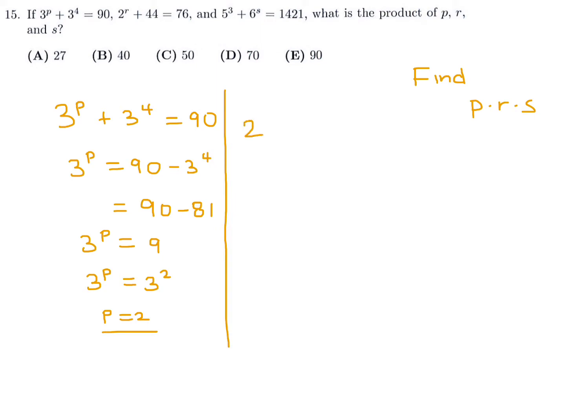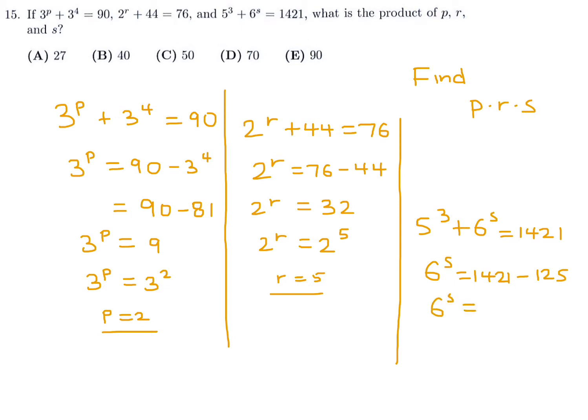Now let's figure out the next one. That's 2 to the power of r plus 44 is 76. So 2 to the power of r is 76 minus 44. 76 minus 44 is 32. And 32 is 2 to the power of 5. So that means that r is equal to 5. And then last one is 5 to the power of 3 plus 6 to the power of s is 1,4,2,1. 5 to the power of 3 we can put on the other side. So 6 to the power of s is 1,4,2,1 minus 5 to the power of 3, which is 125. So 6 to the power of s is 1,2,9,6. 1,2,9,6 is 6 to the power of 4. And therefore s is equal to 4. So that means p times r times s is 2 times 5 times 4, and that is 40. So number 15, the answer is B.